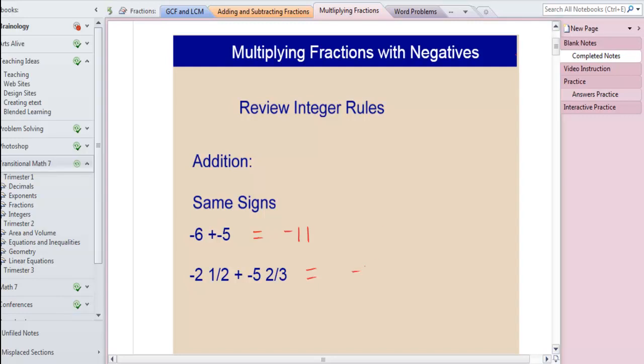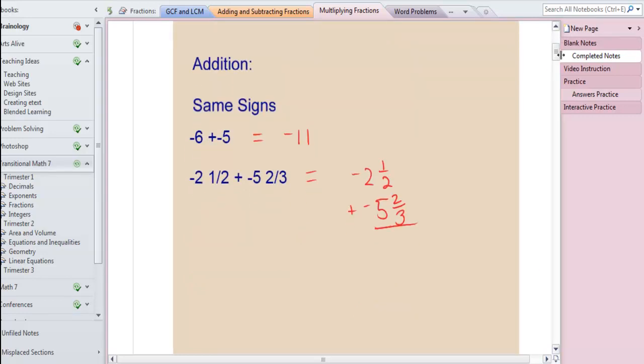So here I'm actually going to add negative 2 1⁄2 plus negative 5 2⁄3. We know that when we're adding fractions, we want to make sure we have the same denominator. So when I get the same denominator for both of these of 6, I end up with negative 7 and 7⁄6. And I need to regroup and I end up with negative 8 and 1⁄6.